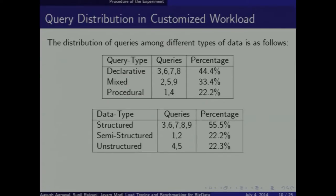The 9 queries are divided into 3 categories: declarative queries, which are pure SQL-type queries; procedural queries, which involve intensive MapReduce tasks; and mixed queries, which are a mixture of both. These 9 queries can operate on 3 types of data: structured data such as tables, semi-structured data, or unstructured data. Generally, a declarative query operates only on structured data, a mixed query can operate on structured or semi-structured data, and you cannot simply run an SQL task on unstructured data or MapReduce on structured data directly.